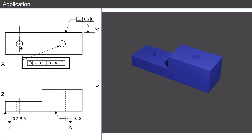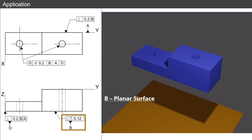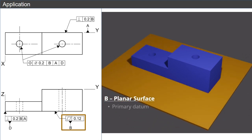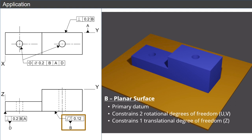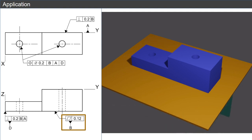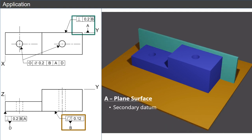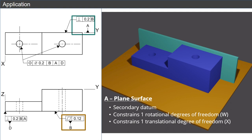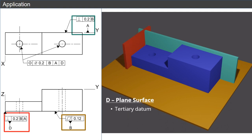Finally, let's look at the datum precedence for the positional tolerance shown here. B, a planar surface, is listed first, so it is the primary datum. It constrains two rotational degrees of freedom, U and V, which are rotation about the X and Y axes, and one translational degree of freedom in the Z direction. The secondary datum, plane A, constrains an additional degree of rotational freedom, which is rotation about the Z axis, or W, and it constrains translational freedom in the X direction. Our third, or tertiary datum, only needs to constrain the sixth degree of freedom, which prevents translation in the Y direction.